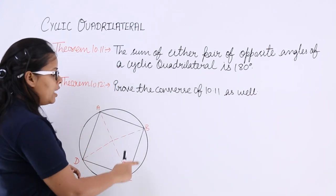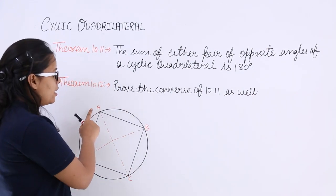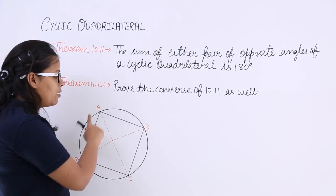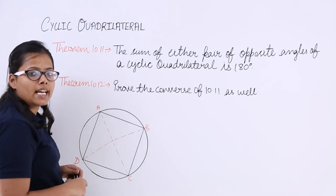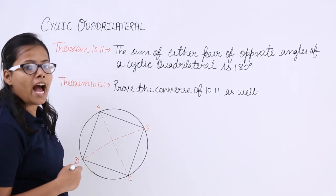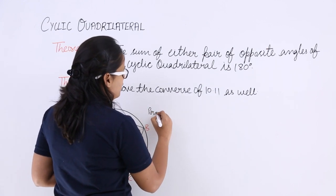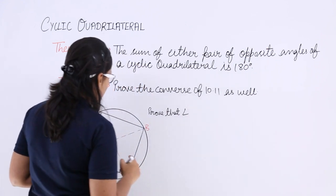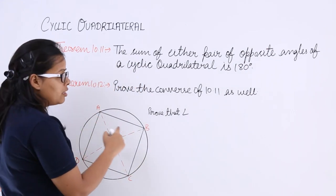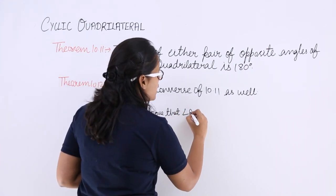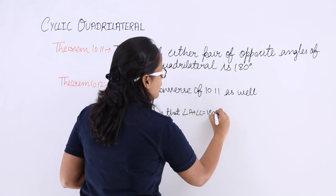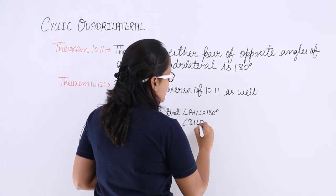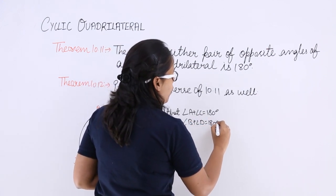Here you can see this is a cyclic quadrilateral. Why? Because A, B, C, and D are lying on a circle, which makes it a cyclic quadrilateral. You have to prove that the sum of opposite angles is equal to 180 degrees — that is, angle A plus angle C equals 180 degrees, and angle B plus angle D equals 180 degrees.